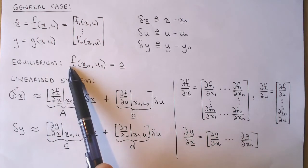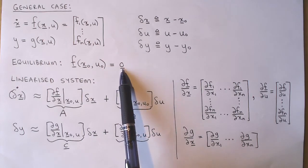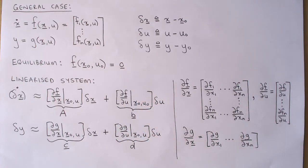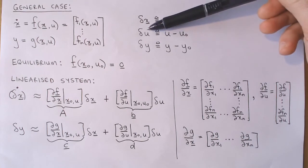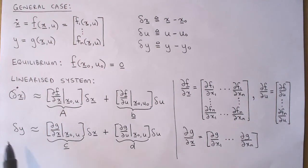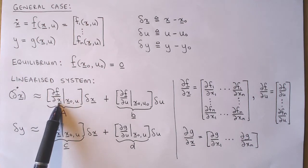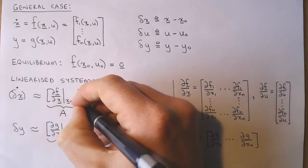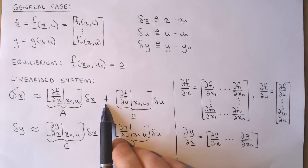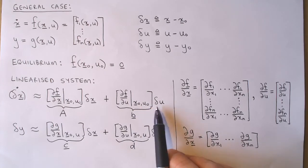To start the linearization process, we choose an equilibrium point around which to linearize. An equilibrium point is defined as a set of states x0 and input u0 such that the state derivatives are all zero. We now define the state deviation from the equilibrium point, the input deviation from the equilibrium, and the output deviation from the equilibrium. The linearized system is given by these two equations. In the state equation, the derivative of delta x is the derivative of f with respect to x, evaluated at x0 and u0, times delta x, plus the derivative of f with respect to u, evaluated at x0 and u0, times delta u.